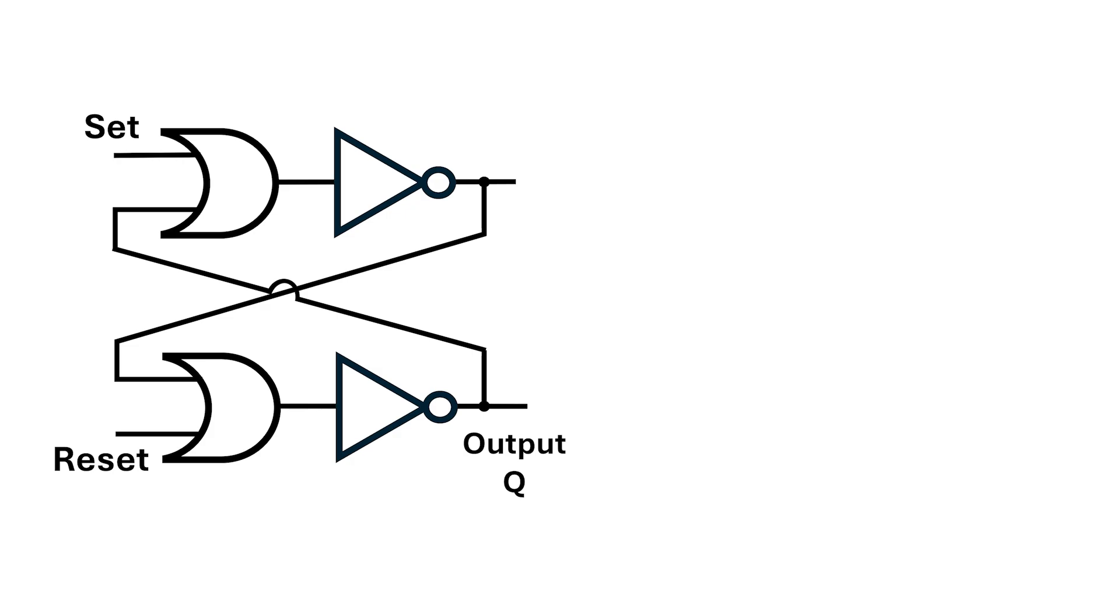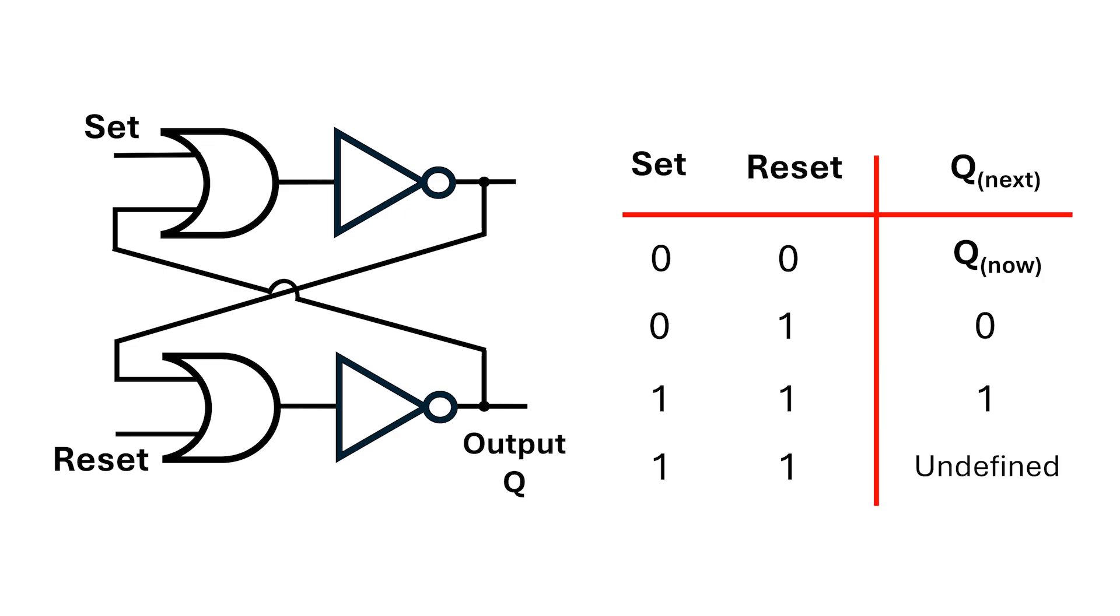In summary, when the set and reset signals are low, or de-asserted, the Q output just stays the same as it was previously. When we assert the reset signal, the Q output goes to zero. When we assert the set signal, the Q output goes to one. But what happens if we assert both set and reset? Well, technically the behavior is undefined. There we have it, the SR latch.